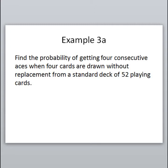Next example: find the probability of getting four consecutive aces when four cards are drawn without replacement from a standard deck of 52 playing cards. Note: you need to know all 52 cards in the deck for your test. Without replacement means we draw a card, set it aside, then draw another — we do not put them back. On our first draw, there are four aces out of 52 cards.